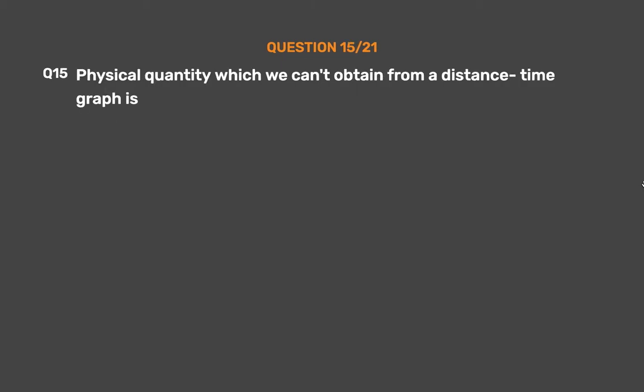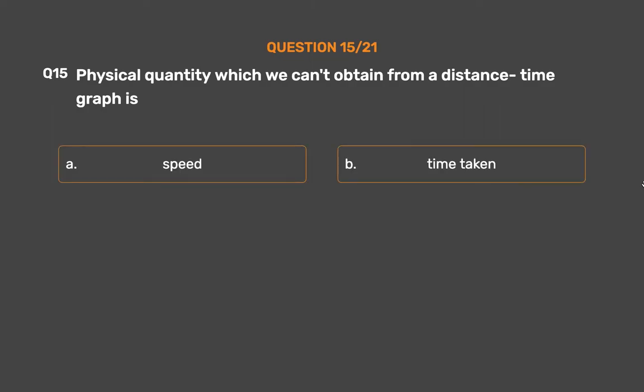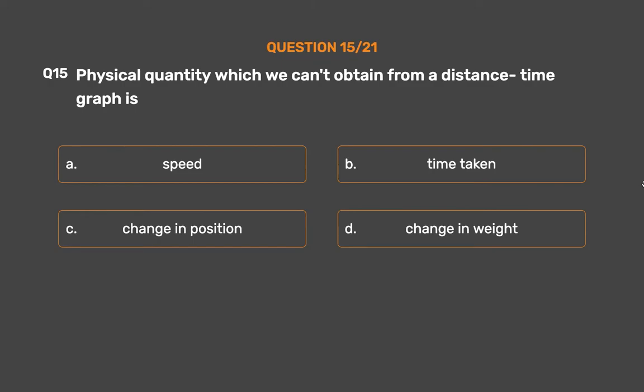Question No. 15. The physical quantity which we cannot obtain from a distance-time graph is: Option A: Speed. Option B: Time taken. Option C: Change in position. Option D: Change in weight.